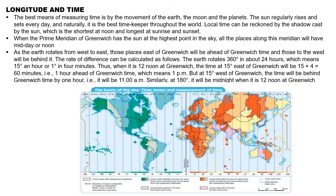Local time can be reckoned by the shadow cast by the sun. When it is 12 o'clock noon, the shadow will be the shortest. At sunrise and sunset, the shadow will be the longest. When the prime meridian at Greenwich has the sun at the highest point in the sky, all places along this meridian will have midday or noon.